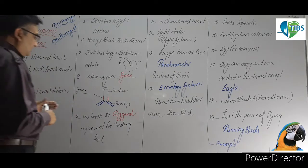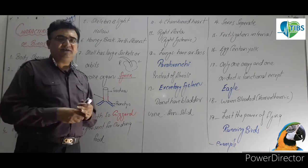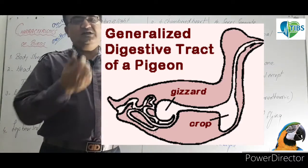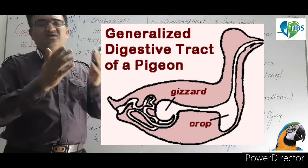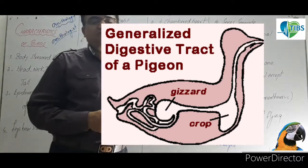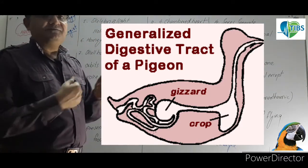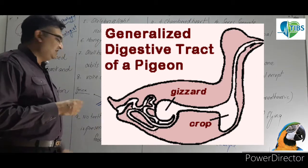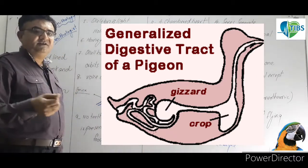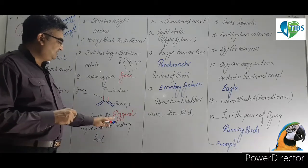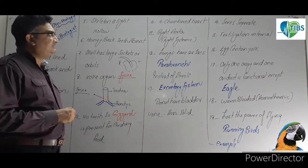Because they don't have teeth, when they eat food, something is needed to grind the food. So they have a stomach-like organ called gizzard which has teeth-like structures to break down and crush the food. Gizzard can again be an MCQ.